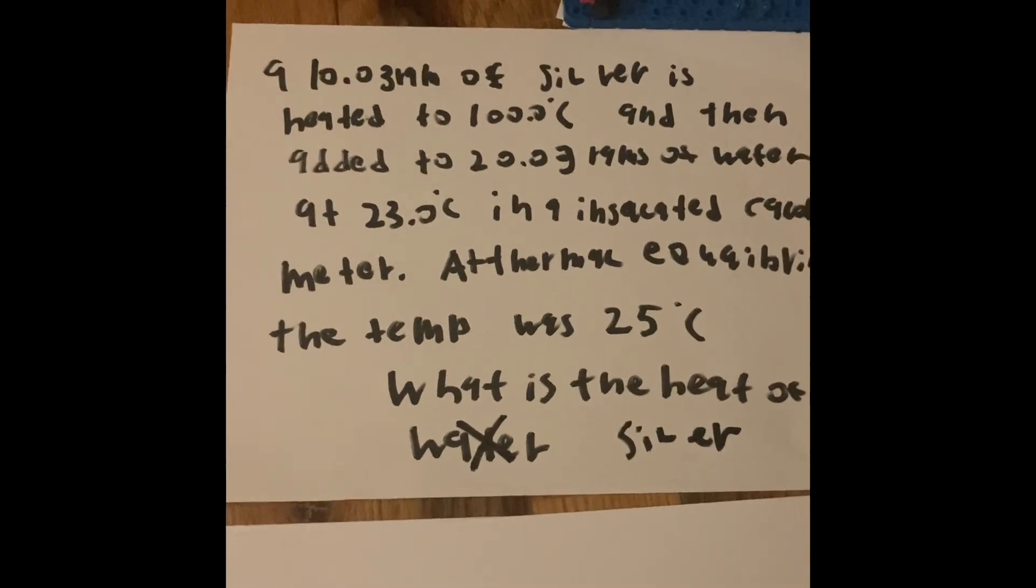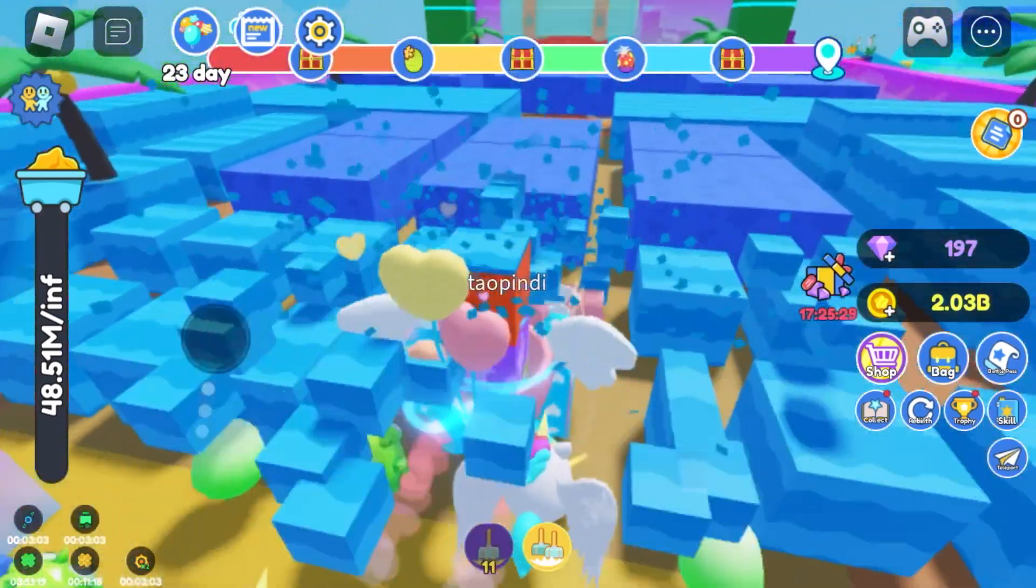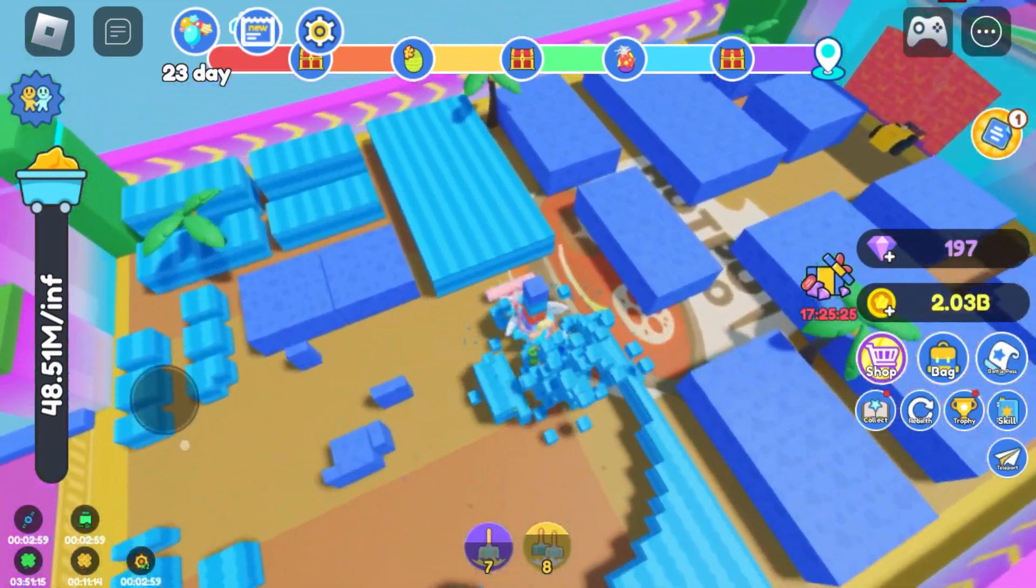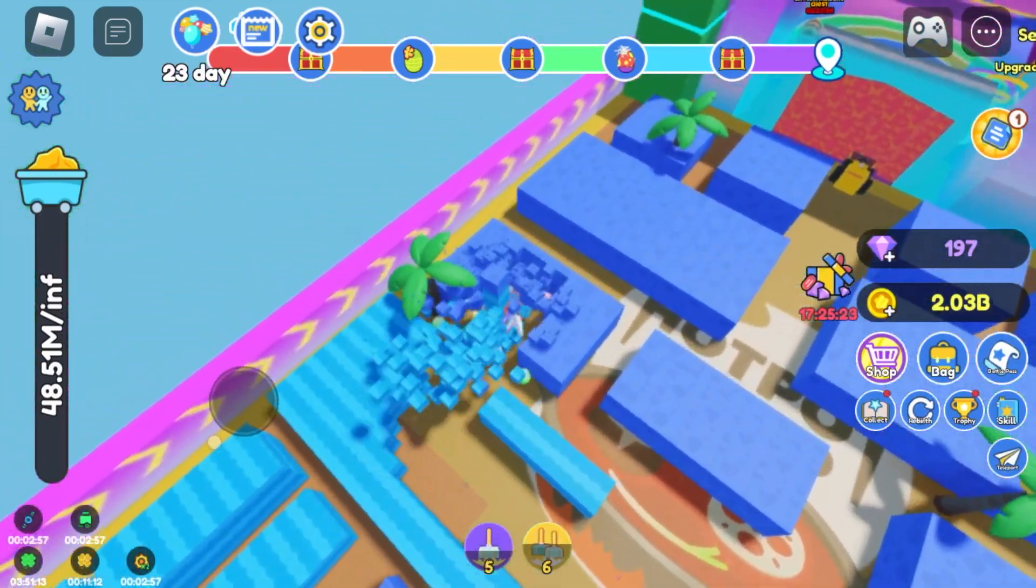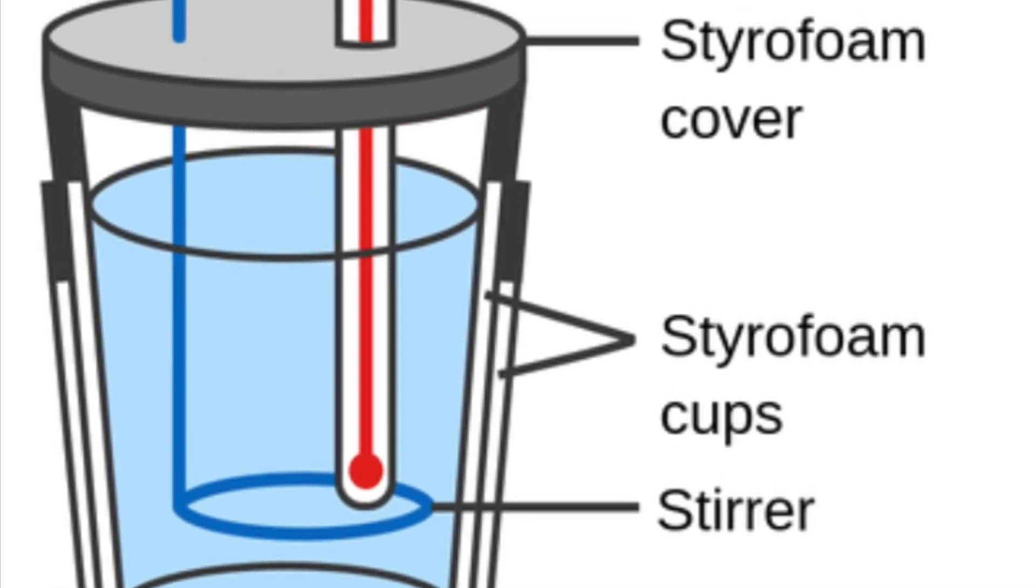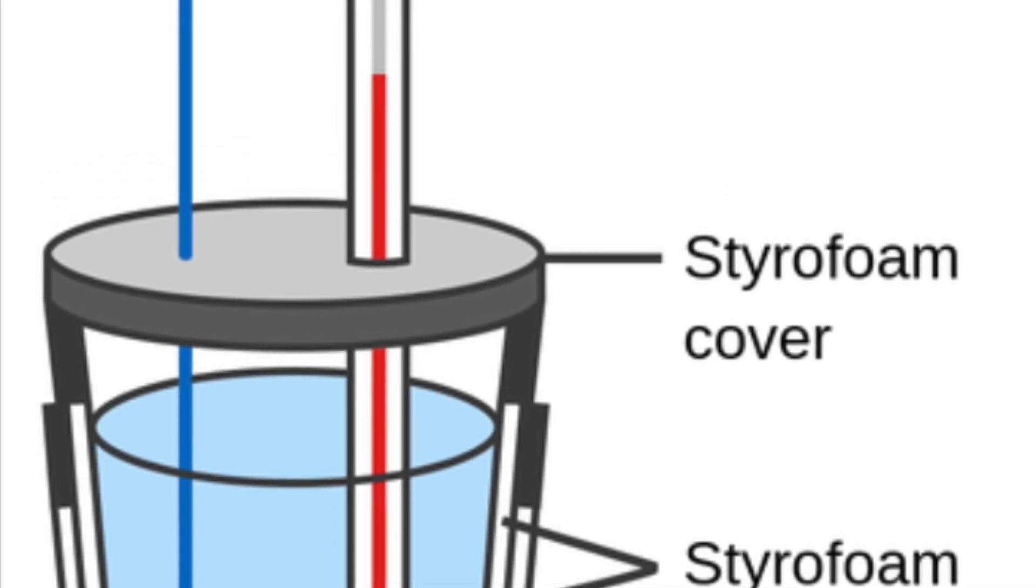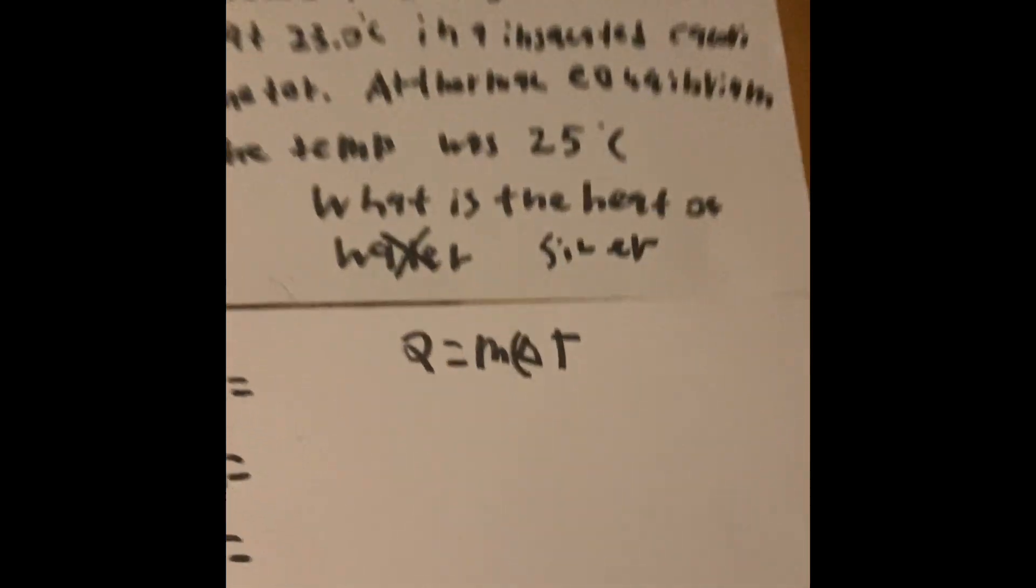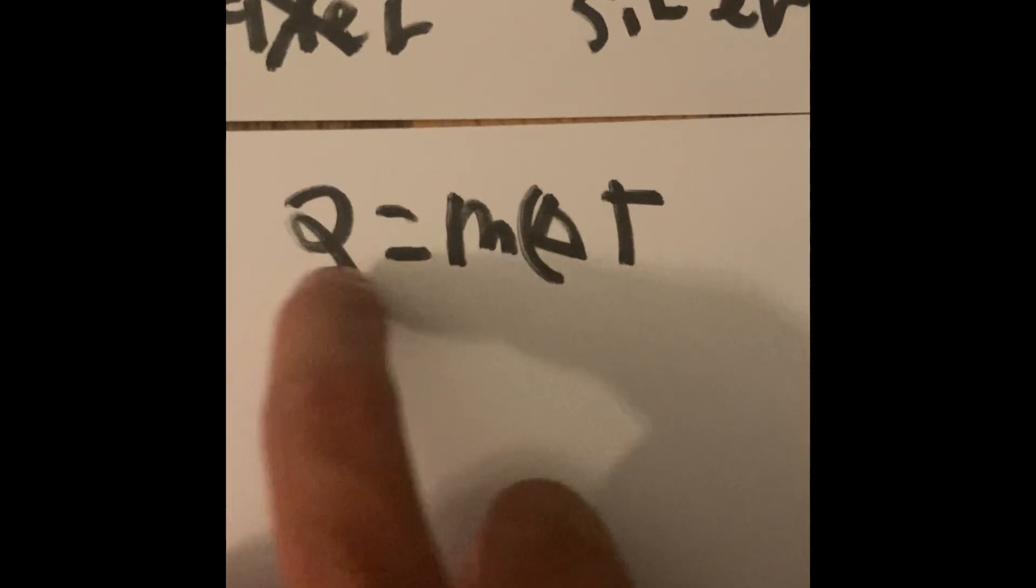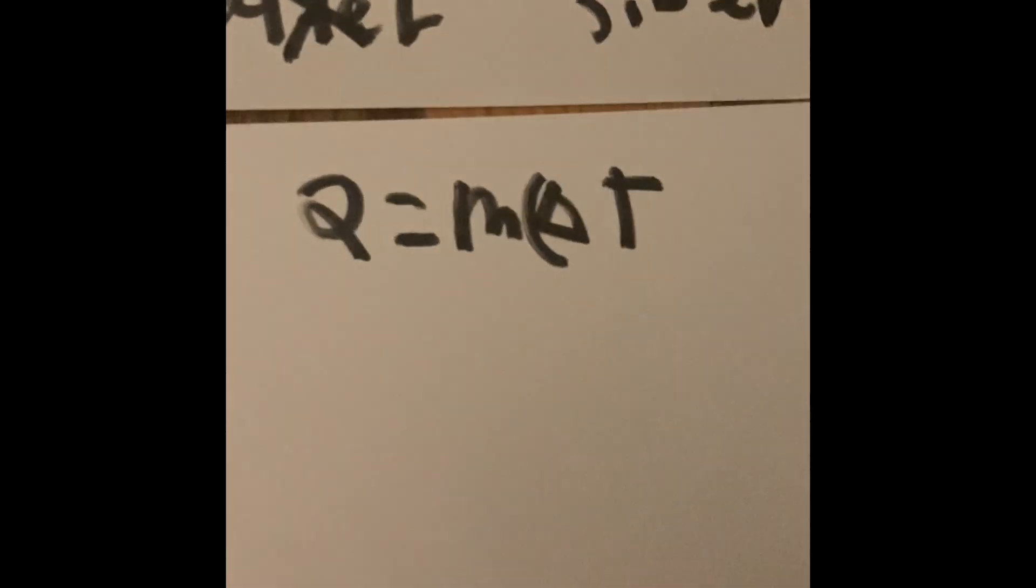So what is the specific heat of the silver? In the last few videos, you probably saw this formula earlier. Q equals M times C times the change in temperature.